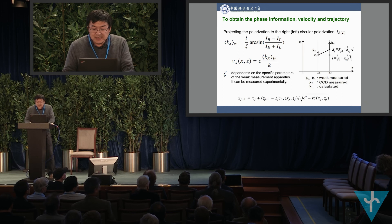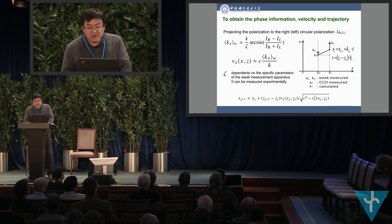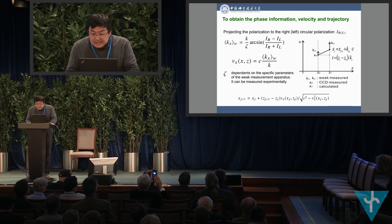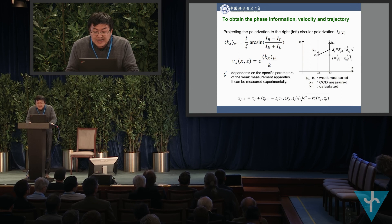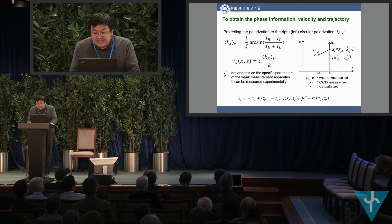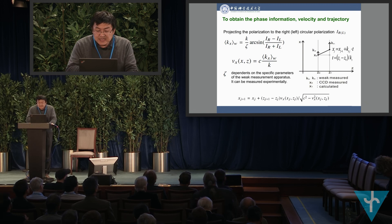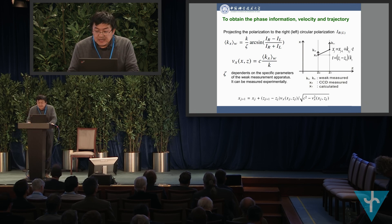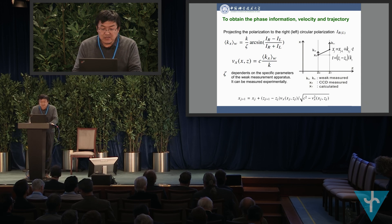For Bohmian trajectories, suppose we find the particle at position x₀, z₀ with a CCD camera, and we get the Bohmian velocity v₀ at this position with weak measurement. Then we can get the next position of the photon x₁, z₁ by simple calculation according to the equation, and so on. We can thus reconstruct the full Bohmian trajectories.